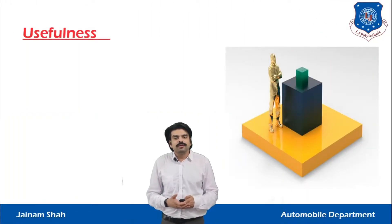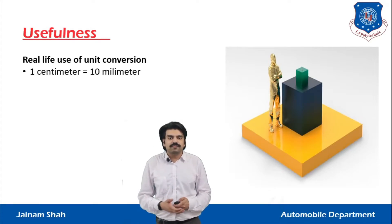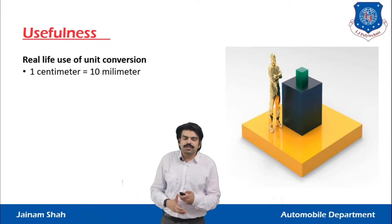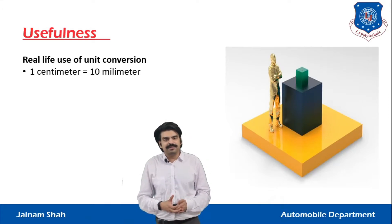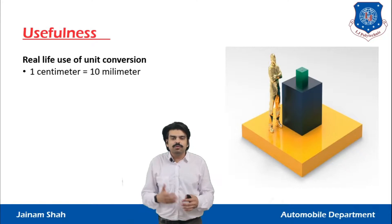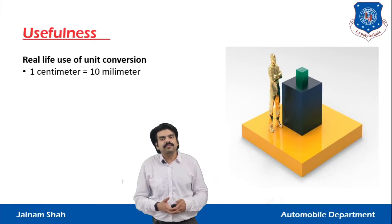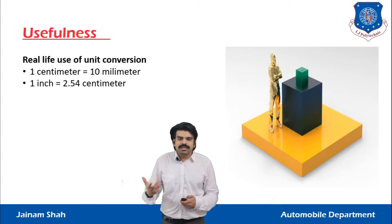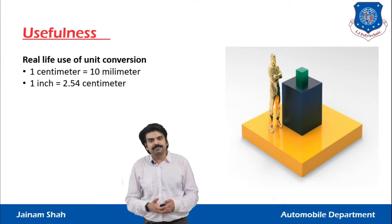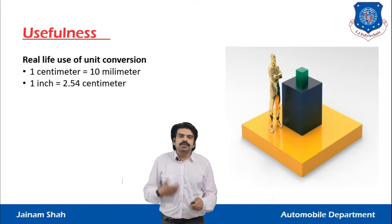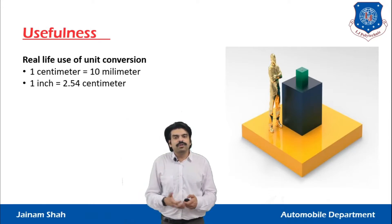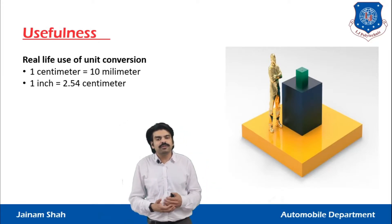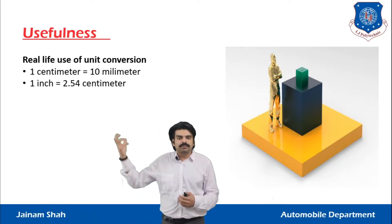Now let's look upon some basic unit conversions. We will start with the centimeter — one centimeter is equal to 10 millimeters, which is our most basic information. Next, one inch is equal to 2.54 centimeters. Inch is the measuring unit which we are going to use while buying hollow pipes for construction or water transferring devices.